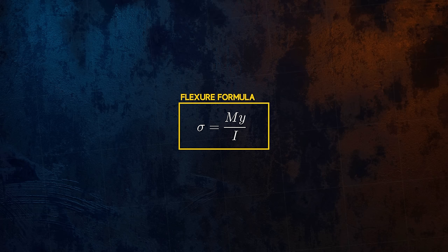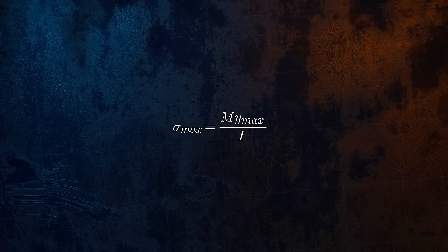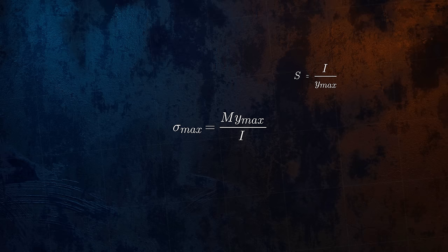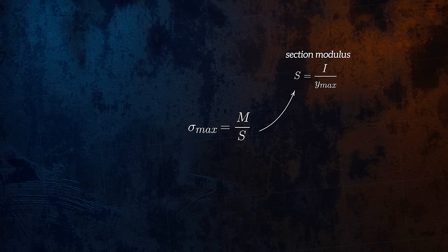The maximum stress occurs at the fibres furthest from the neutral axis. The term I over Y max depends only on the geometry of the cross section, and so it is called the section modulus, and is denoted using the letter S. You will often see the section modulus listed for a range of common beam cross sections in reference texts.